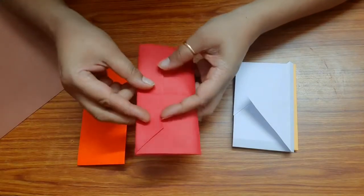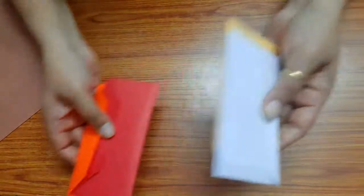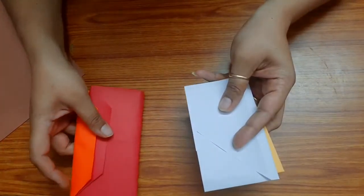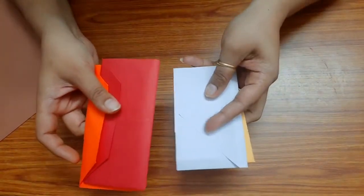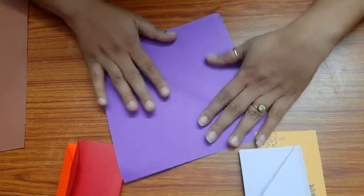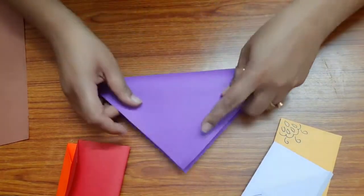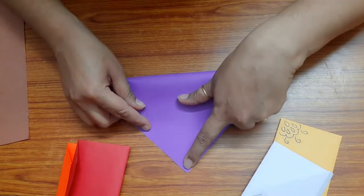This is made with a square paper, and this is made with a rectangular paper. So let's start with a square paper. First, fold the paper diagonally.